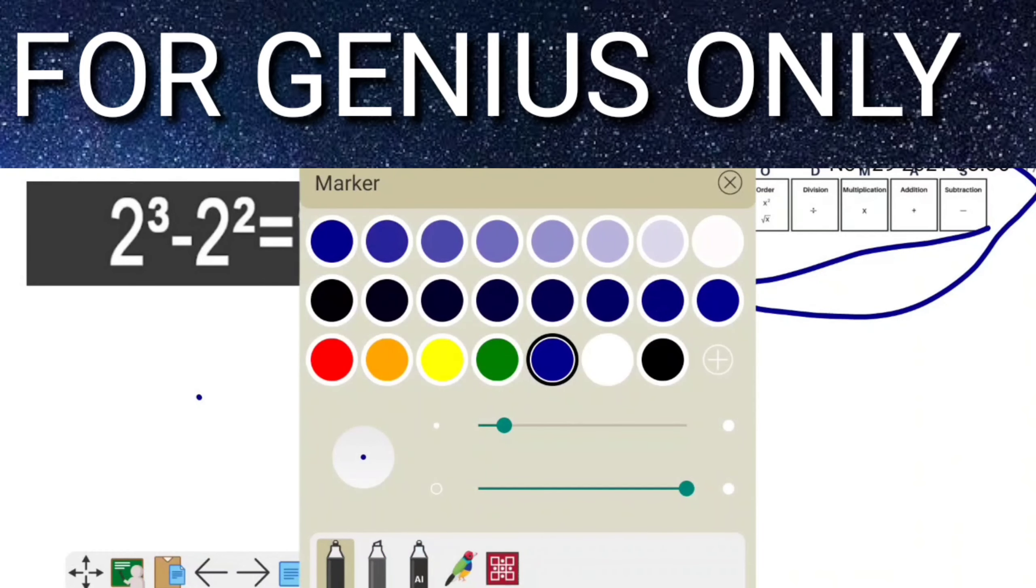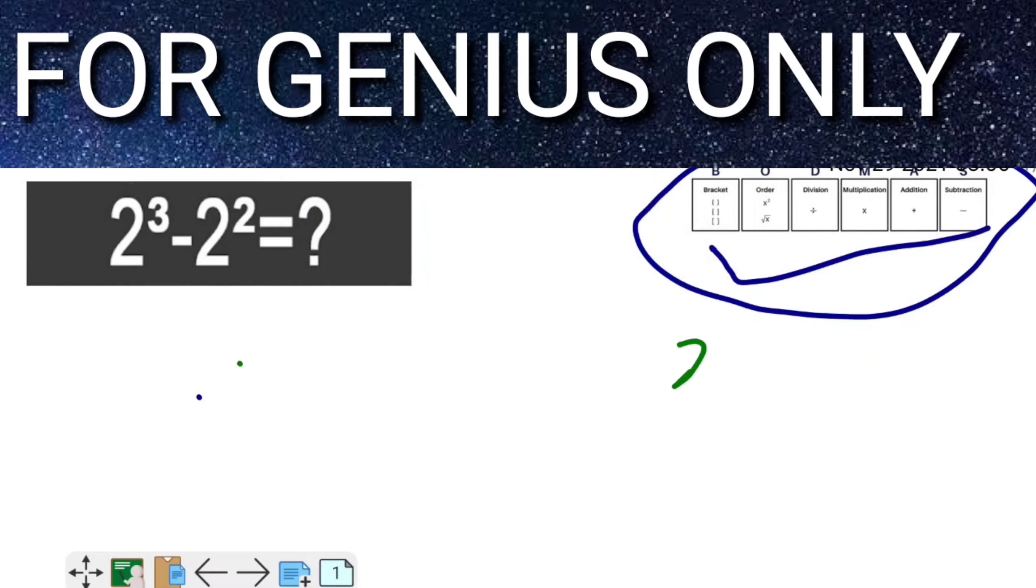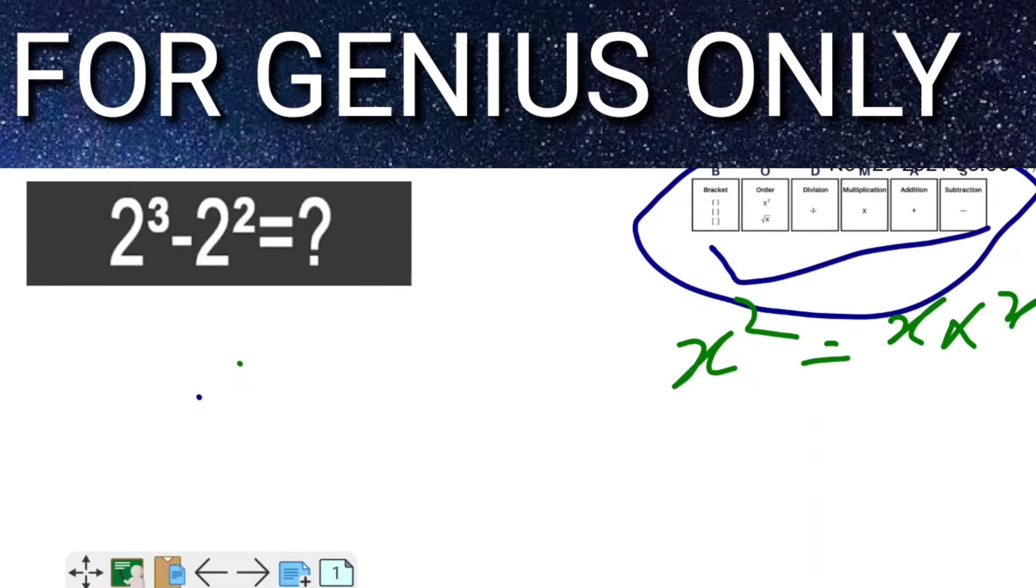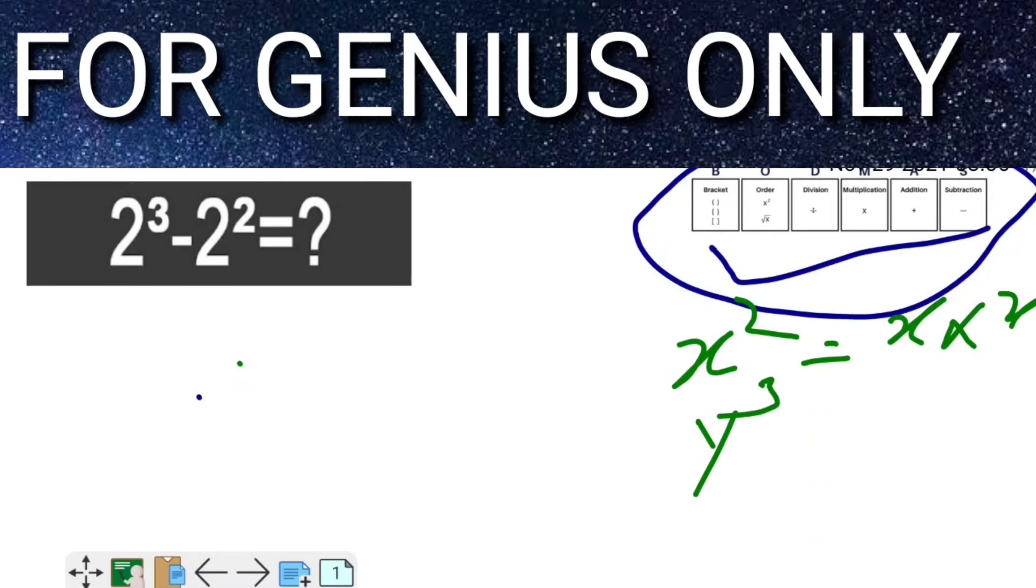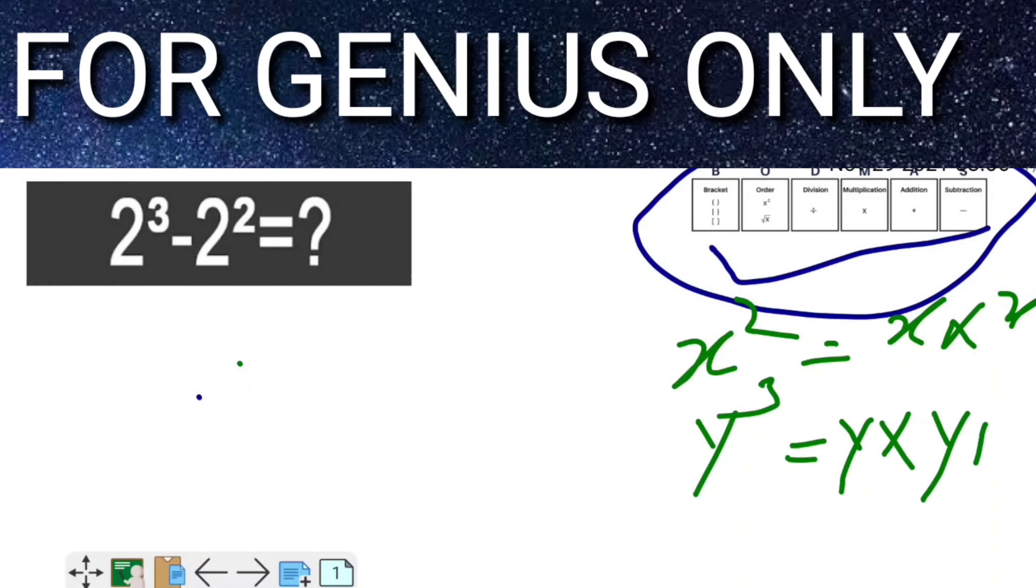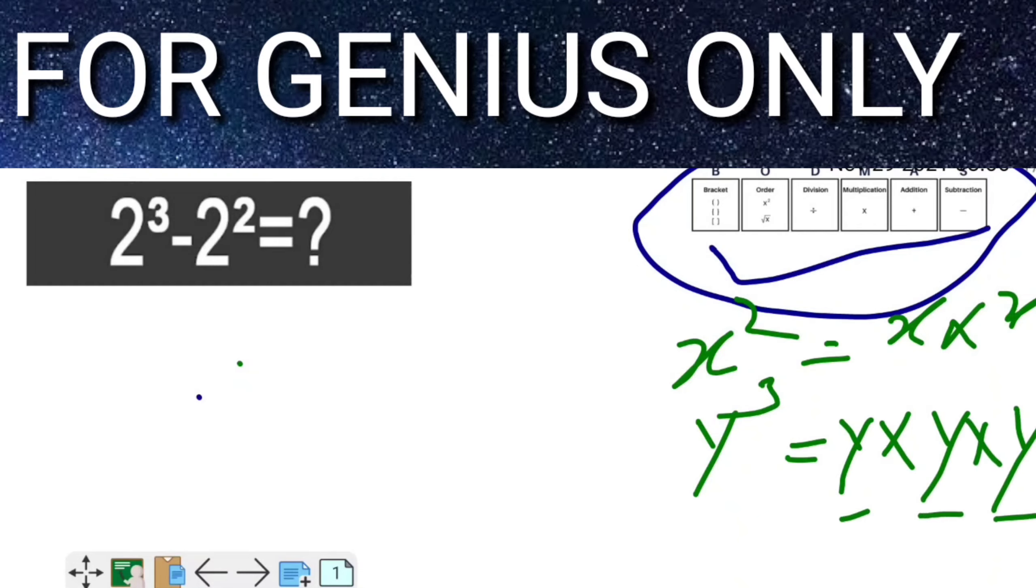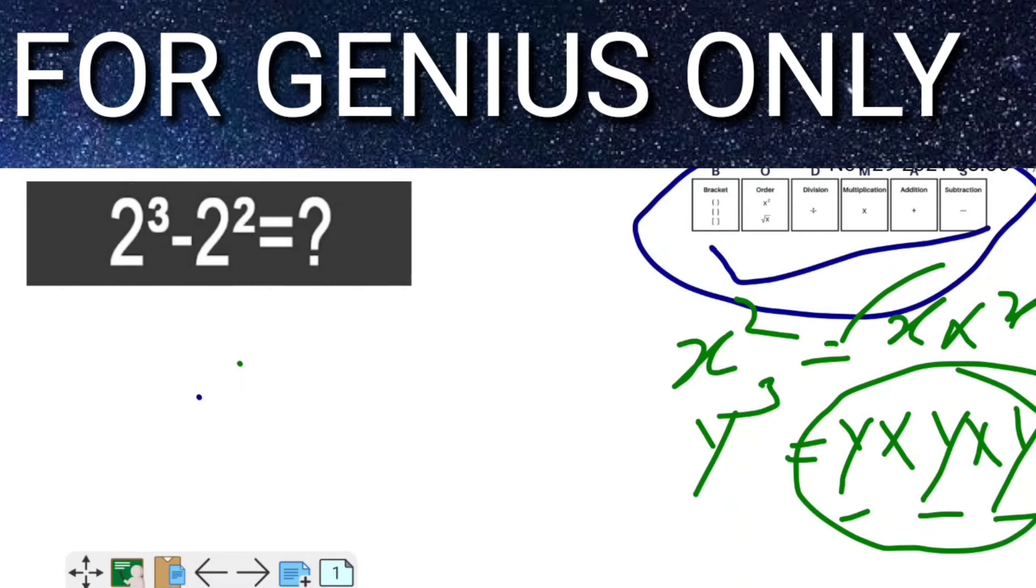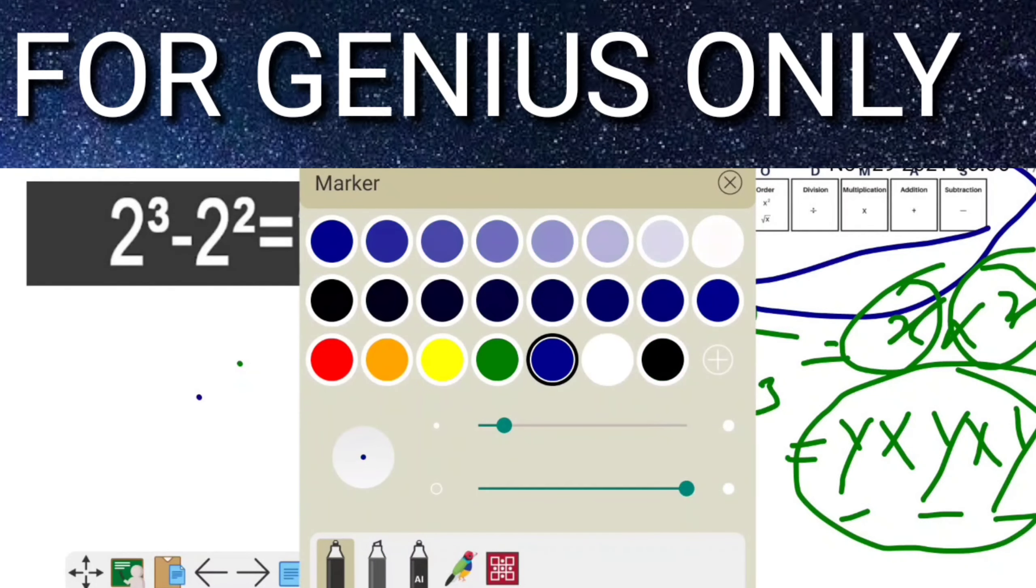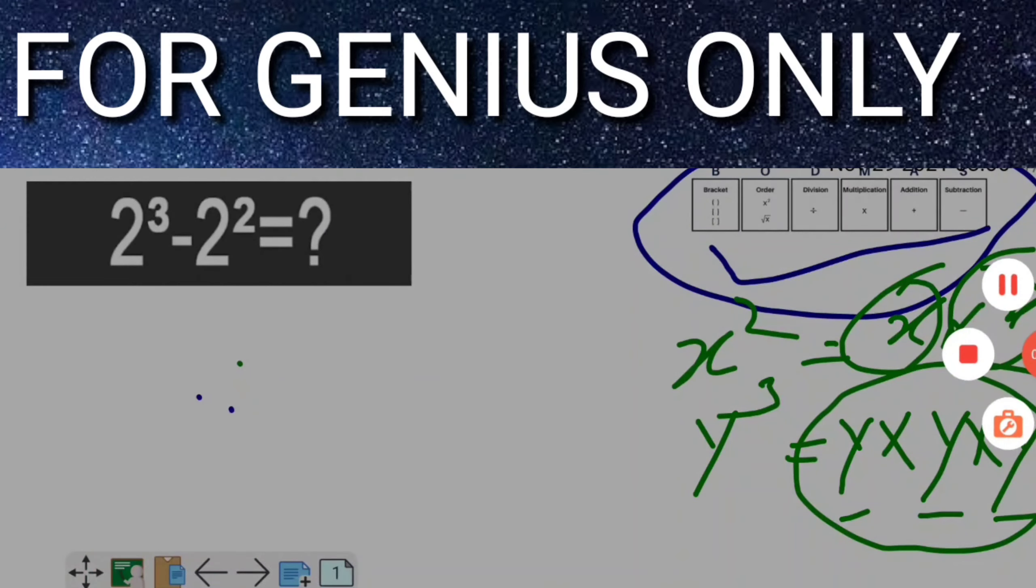See friends, what does 'a square' mean? a² means a multiply a. If y², that means y multiply y. x² means x multiply x. I hope you understand and are able to solve this equation very easily.